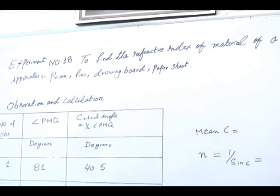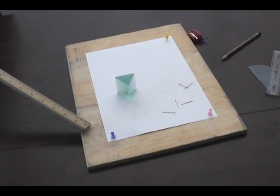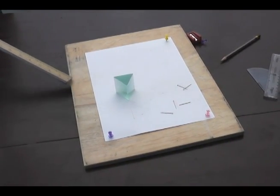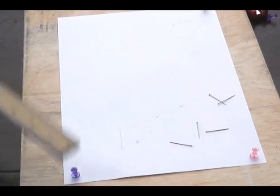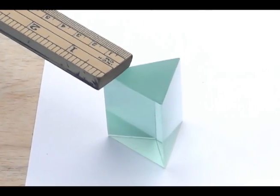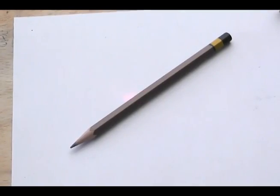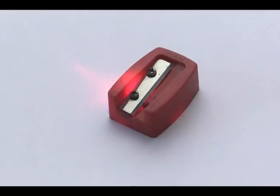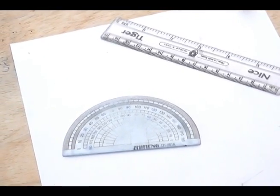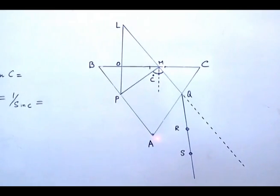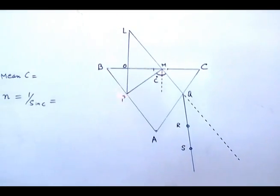The apparatus includes pins, a drawing board, and a sheet of paper. This is a wooden board, sheet of paper, pins, a glass prism, few paper pins, a pencil, a sharpener, a ruler, and a protractor.